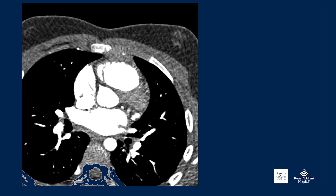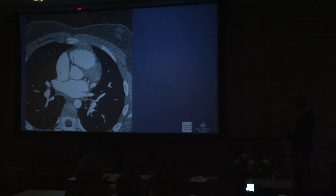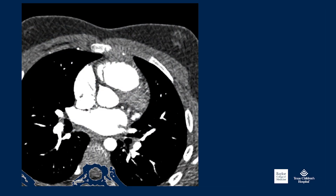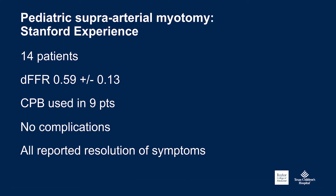You might ask how you could get a ventricular aneurysm from unroofing a small amount of muscle. In a patient I recently operated on, the bridged coronary artery is immediately adjacent to the right ventricular outflow tract — just a millimeter away. If you breach the right ventricular endocardium while incising that muscle, it's very difficult to control without compromising flow in the coronary artery.